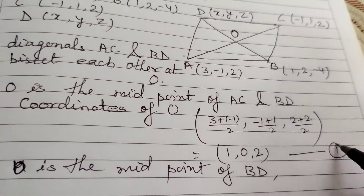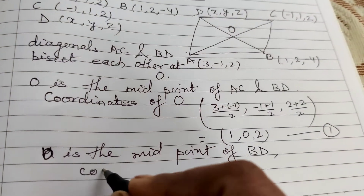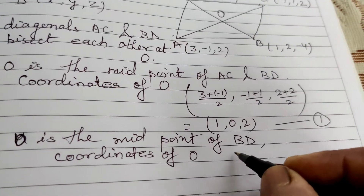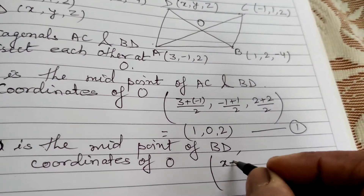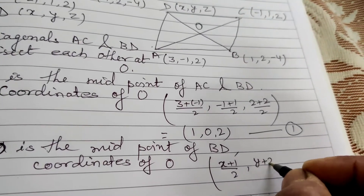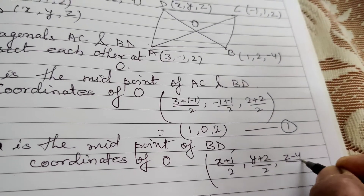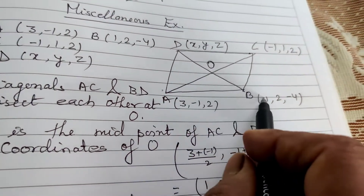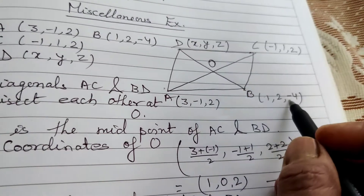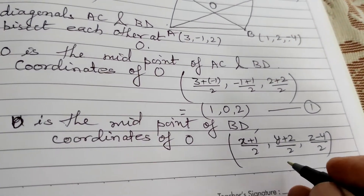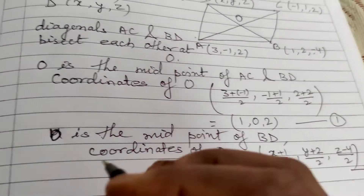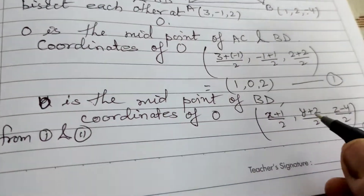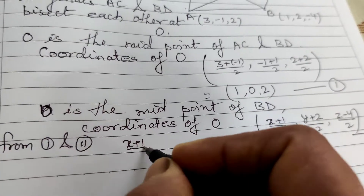O is also the midpoint of BD. So coordinates of O from BD are: x-coordinate = (x + 1)/2, y-coordinate = (y + 2)/2, z-coordinate = (z - 4)/2. From equations 1 and 2, equating x-coordinates: (x + 1)/2 = 1.